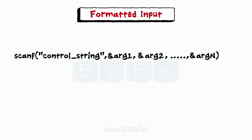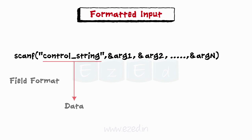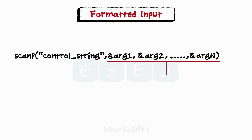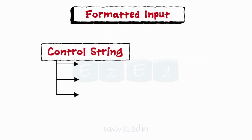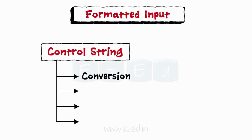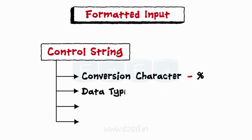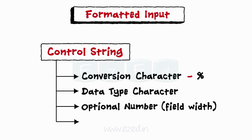The general form of scanf is: a control string specifies the field format in which the data is to be entered, and the arguments arg1, arg2 specify the address of the location where the data has to be stored. The control strings include a conversion character denoted by percentage sign, data type character, optional number specifying the field width, and blanks, tabs, or new lines.